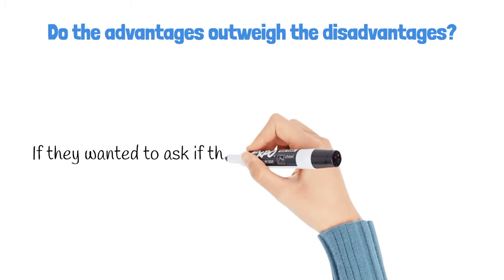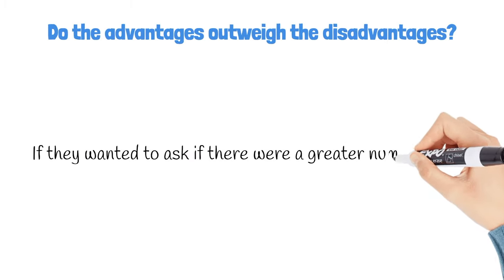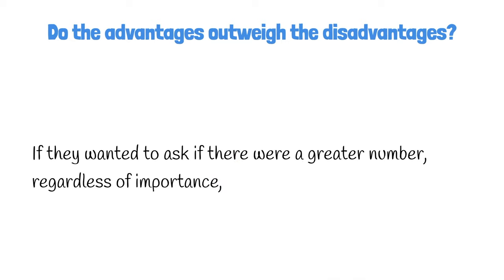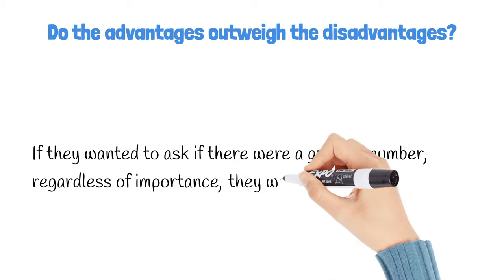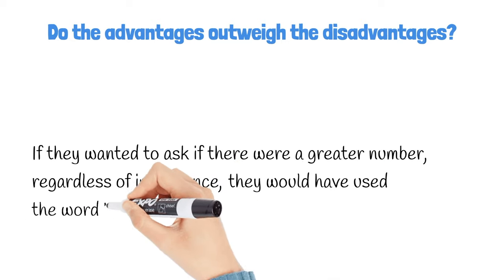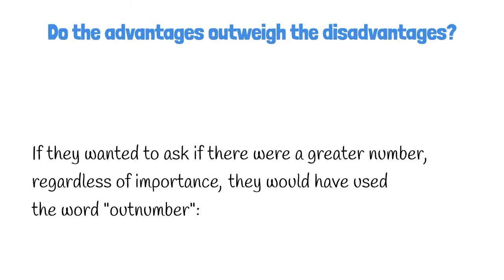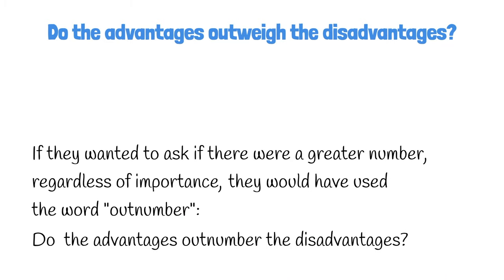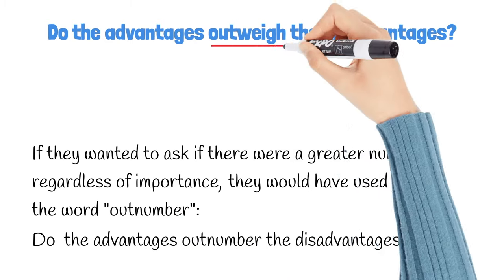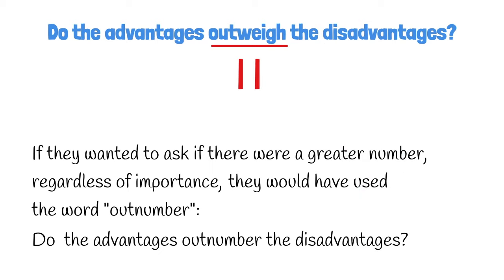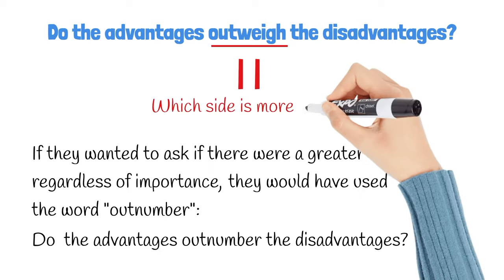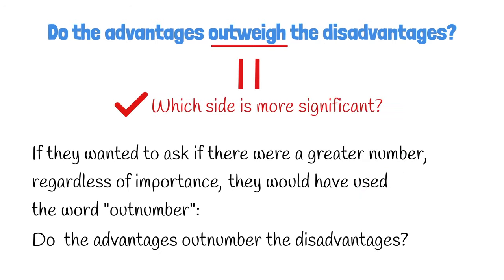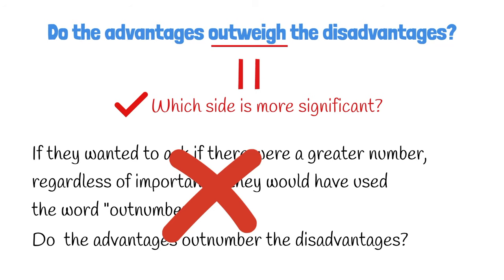If they wanted to ask if there were a greater number, regardless of importance, they would have used the word 'outnumber' — they would have asked, do the advantages outnumber the disadvantages? So please keep in mind that this type of question is asking you which side is more significant, not which side has a greater number.